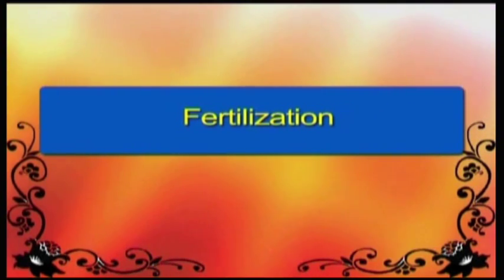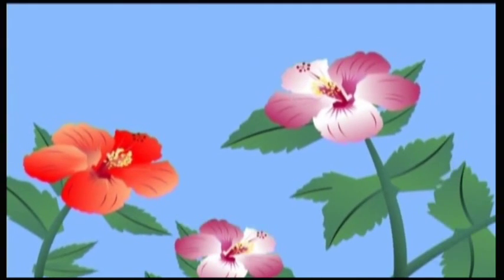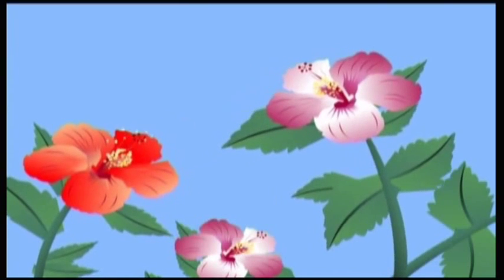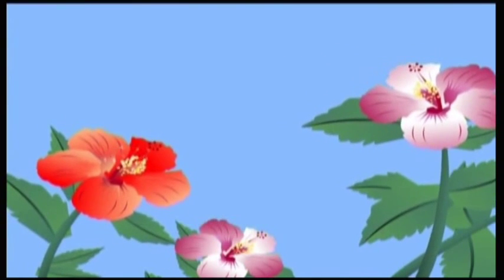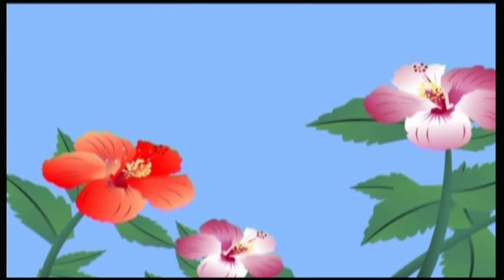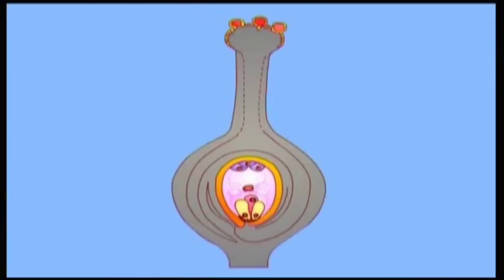Fertilization. Pollen grains are carried by wind and insects and facilitate cross-pollination in plants. Fertilization is the process of fusion of male and female gametes. Pollen grains received by the stigma germinate and give rise to pollen tubes. Only one pollen tube finally reaches the embryo sac.